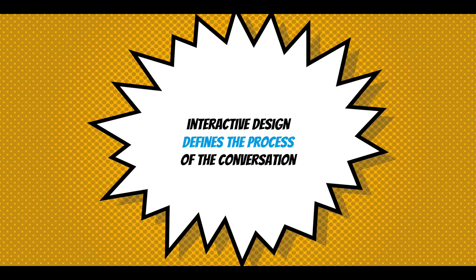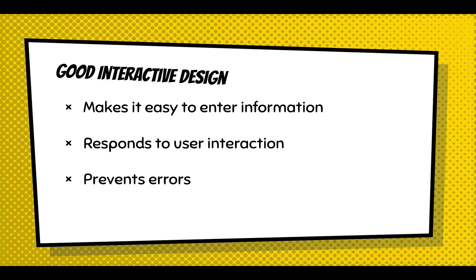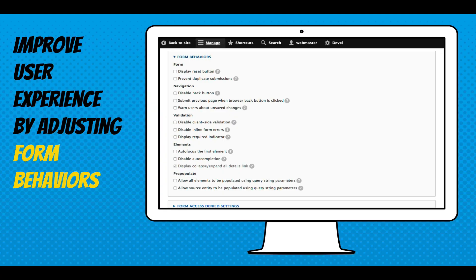Getting into interactive design — it designs the process of the conversation. The goal is to make it easier to enter information and respond to the user's interaction. When they check something, should we display an error? The goal is to prevent errors, make it easy for someone to fill out a form, and help them. You can improve the user experience by adjusting the form behaviors. The Web Form Module has almost a dozen different settings to tweak the form. This is incredibly powerful — you can pre-populate elements through query string parameters.